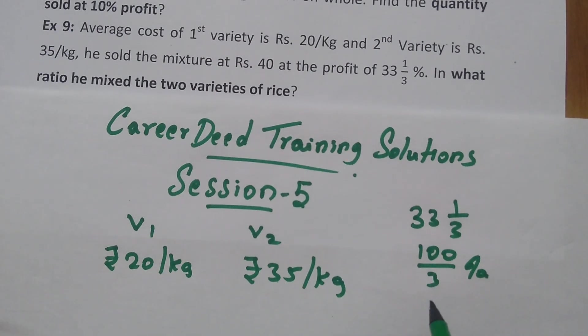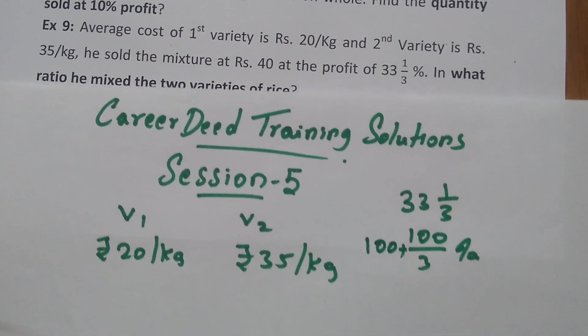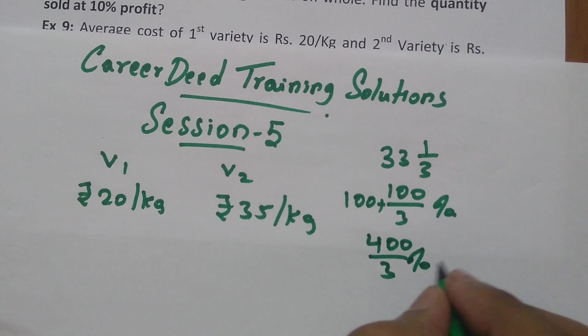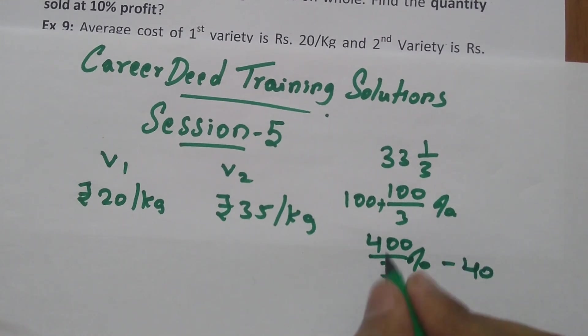So here you are getting 100/3% profit. This 100/3% is profit, with this you have to add the 100% which is the cost price. So 100+100/3% gives you 400/3%. So you sold the product for 400/3% which is 40 rupees. If 40 rupees is 400/3%, you have to find the 100% which is the cost price.